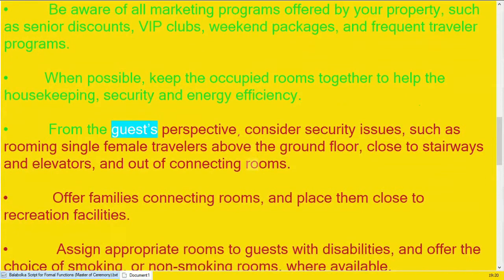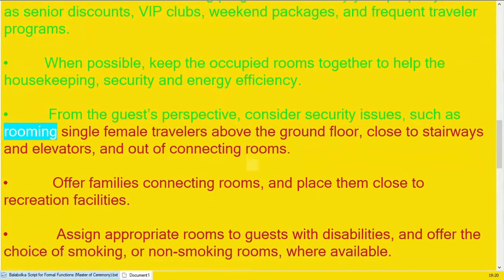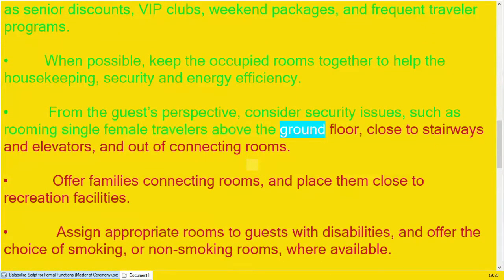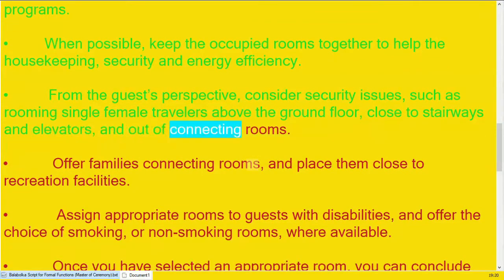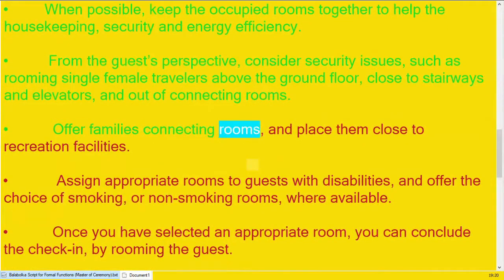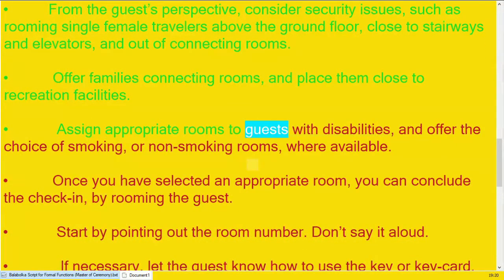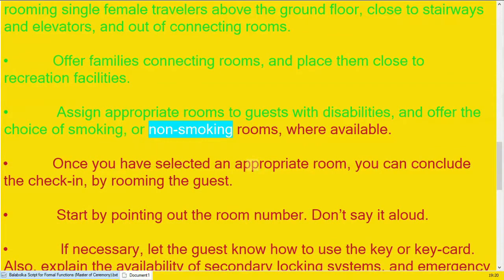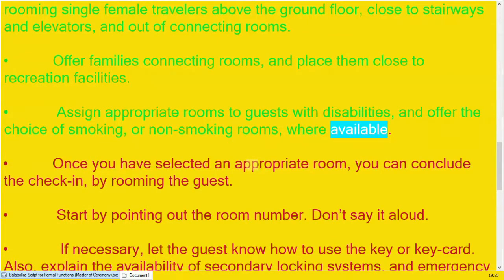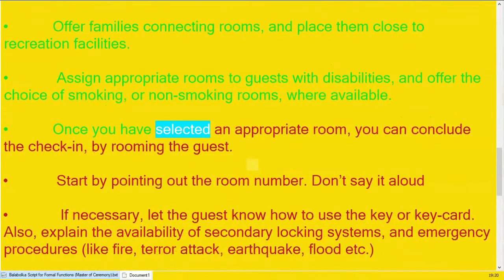From the guest's perspective, consider security issues such as rooming single female travelers above the ground floor, close to stairways and elevators, and out of connecting rooms. Offer families connecting rooms and place them close to recreation facilities. Assign appropriate rooms to guests with disabilities and offer the choice of smoking or non-smoking rooms where available.